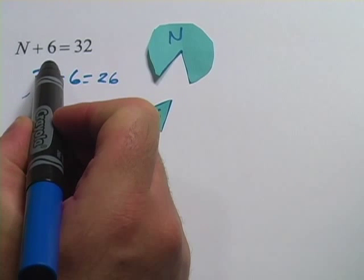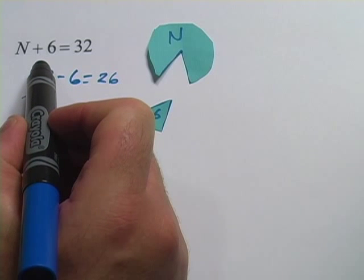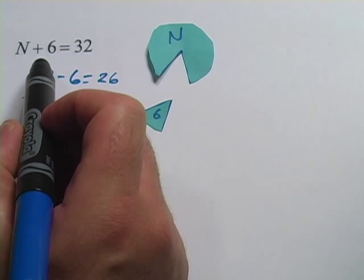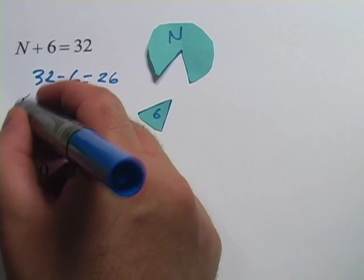On this side, we have N + 6. So instead of plus 6, we have to do the opposite of that, and the opposite of plus is minus. So we would make it look like this.